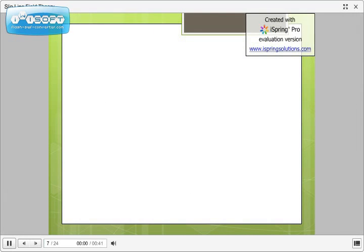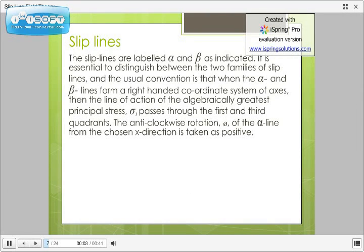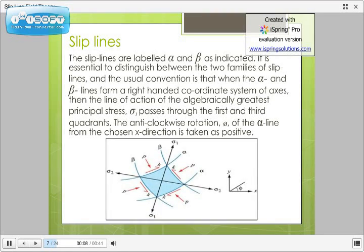Now, let us look at the conventions used to distinguish between alpha lines and beta slip lines. The slip lines are labeled alpha and beta as indicated in the figure below. It is essential to distinguish between the two families of slip lines and the usual convention is that when the alpha and beta lines form a right-handed coordinate system of axes, then the line of action of the algebraically greatest principal stress, sigma 1, passes through the first and the third quadrants. The anti-clockwise rotation theta of the alpha line from the chosen axis is taken as positive. Here, P is hydrostatic pressure which is orthogonal to the slip line and K is the pure shear strength which is tangential to the slip line.